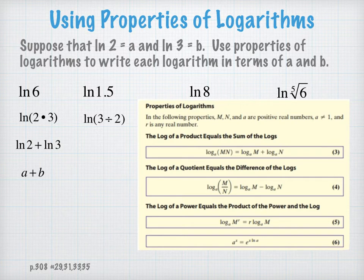So now I can apply the second logarithmic property that the log of a quotient is equal to the difference of the logs. And I've been given the natural log of 3 being b, natural log of 2 being a, so my answer here is b minus a.